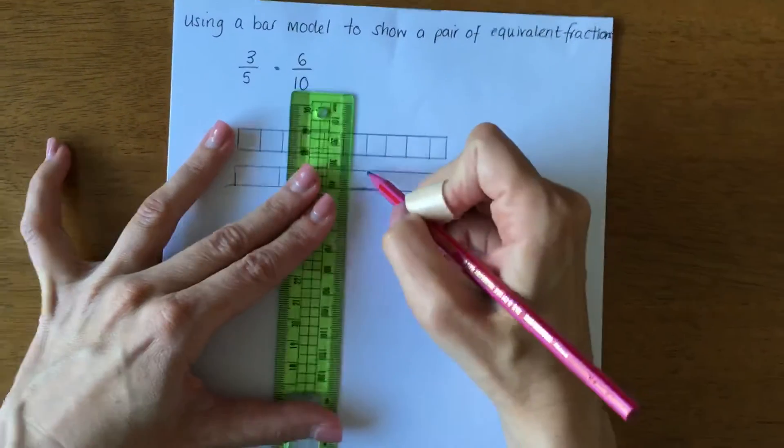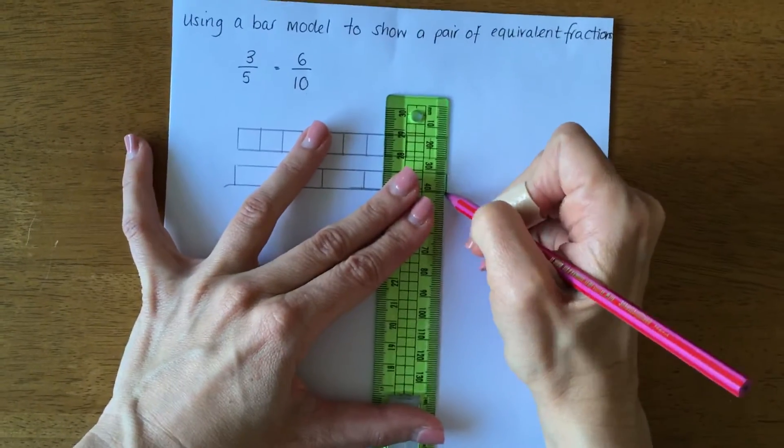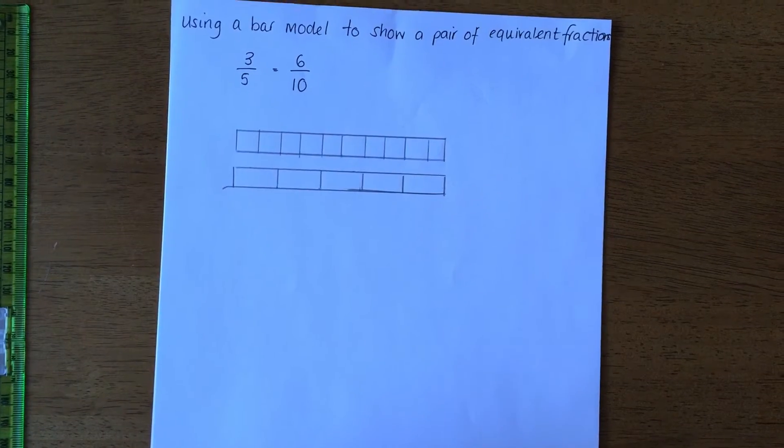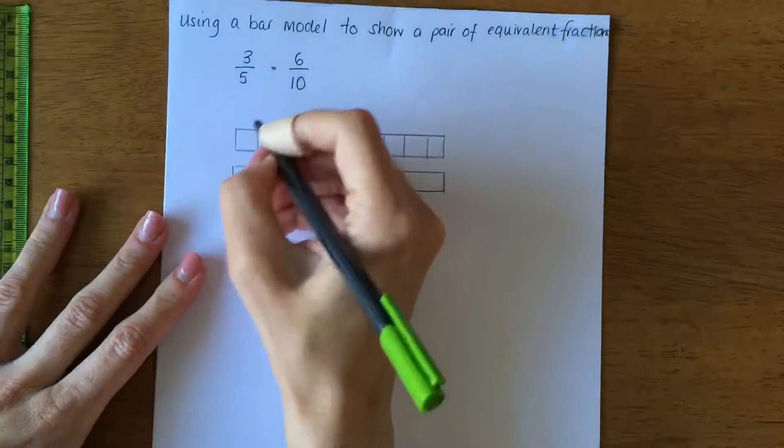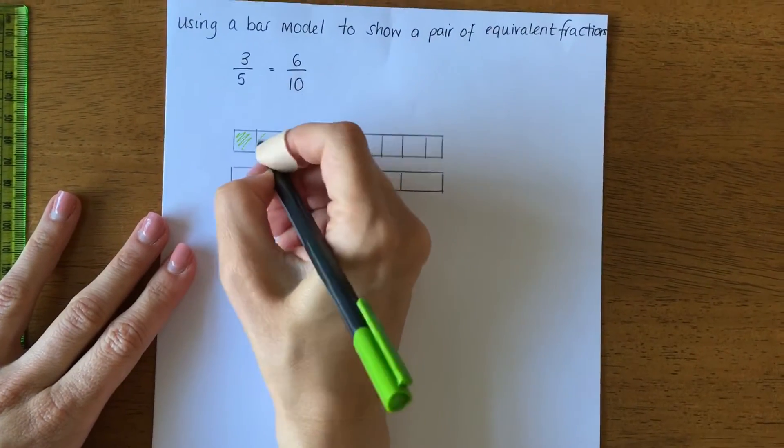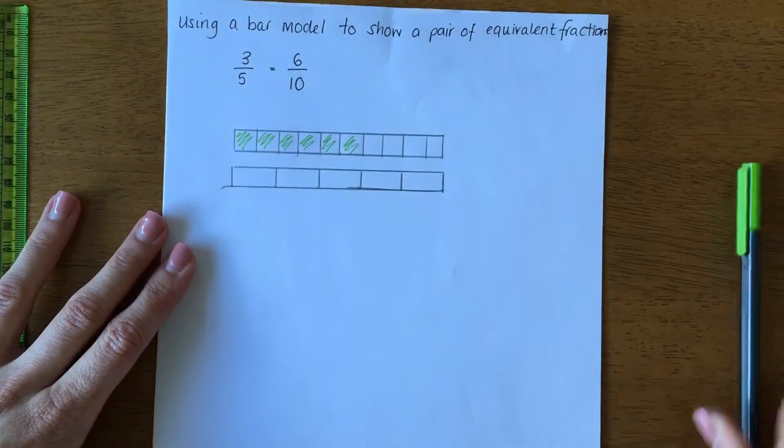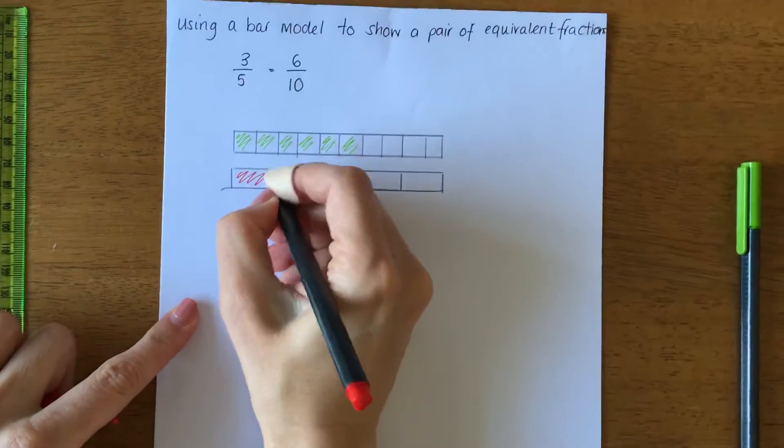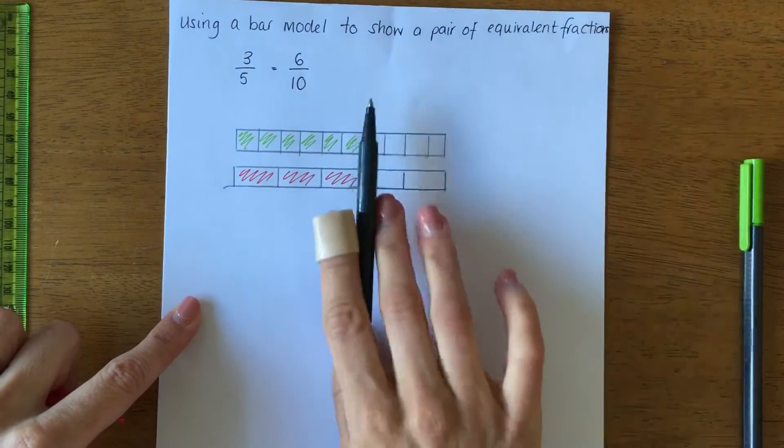Now, how are we going to show that 3/5 and 6/10 are equivalent? Well, with two different colors. I'm going to pick green first and shade in 6/10—so one, two, three, four, five, six—which is equivalent to 3/5. We can see that because we've colored up to this exact same amount.